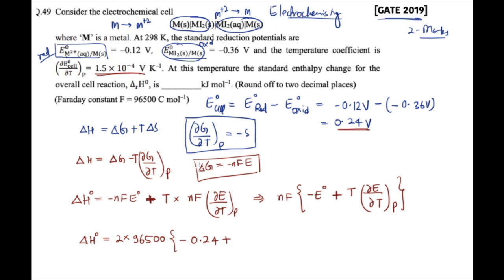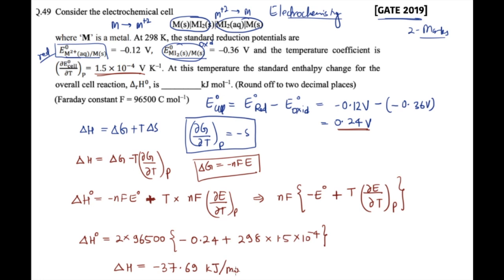Substituting all values: ΔH° = 2 × 96500 × [−0.24 + 298 × 1.5×10⁻⁴]. Solving this gives ΔH° = −37.69 kJ/mol. That is the answer for this question.